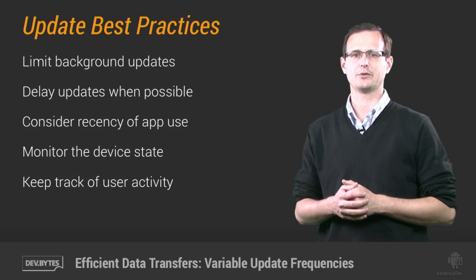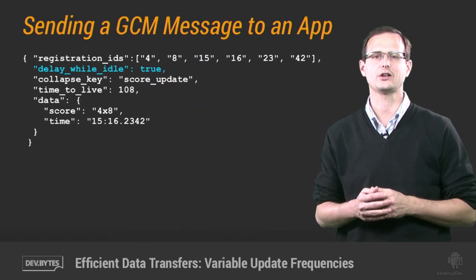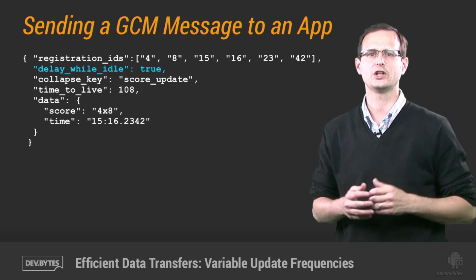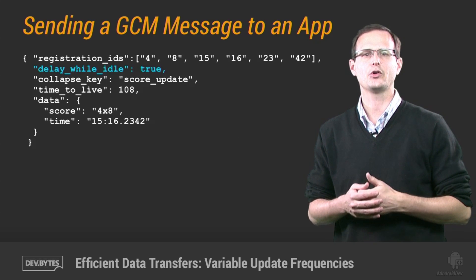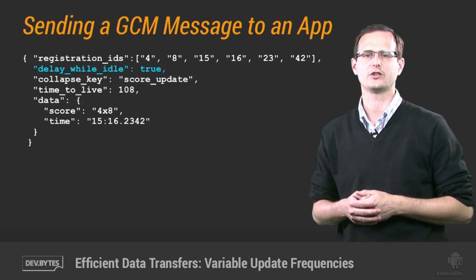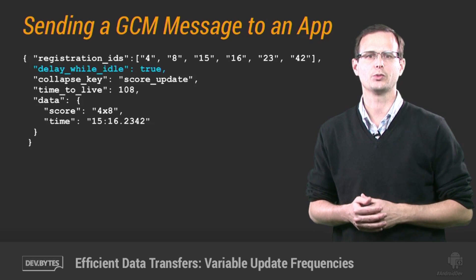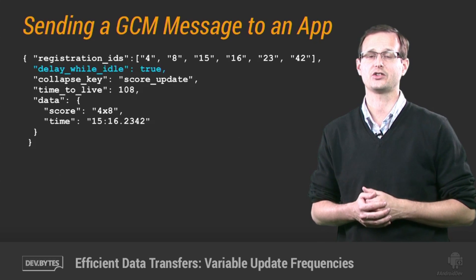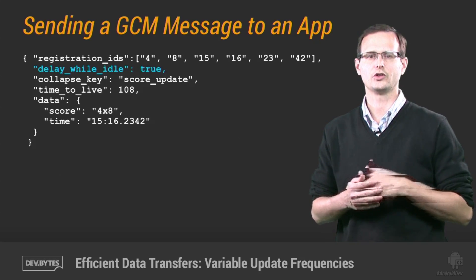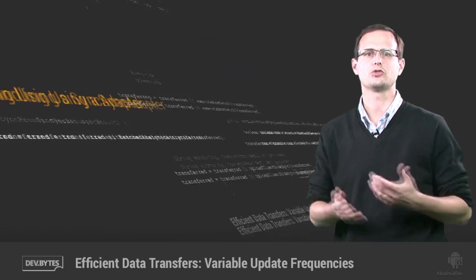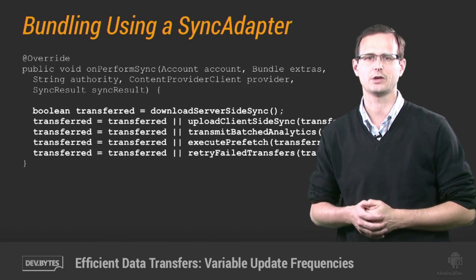In my devbyte on Google Cloud Messaging, you learned that you can set your server messages to be delayed when the device is idle. As a result, your messages will be queued and that queue is collapsed so that your app only receives one message when the device becomes active. That's a useful start as it prevents multiple updates from happening when the user isn't actually using the device.